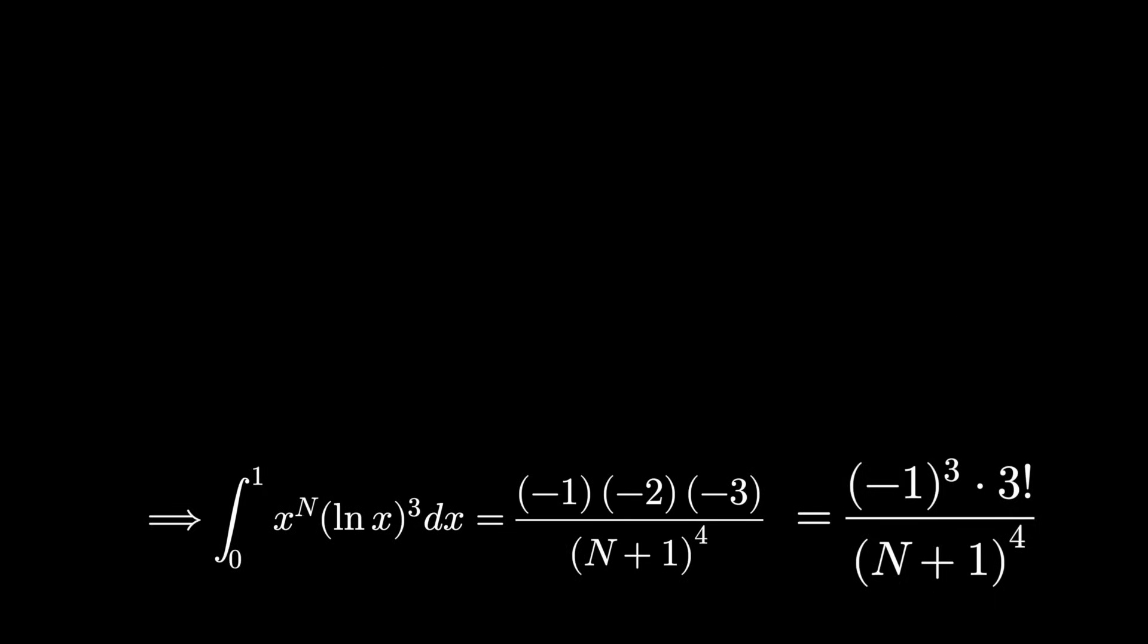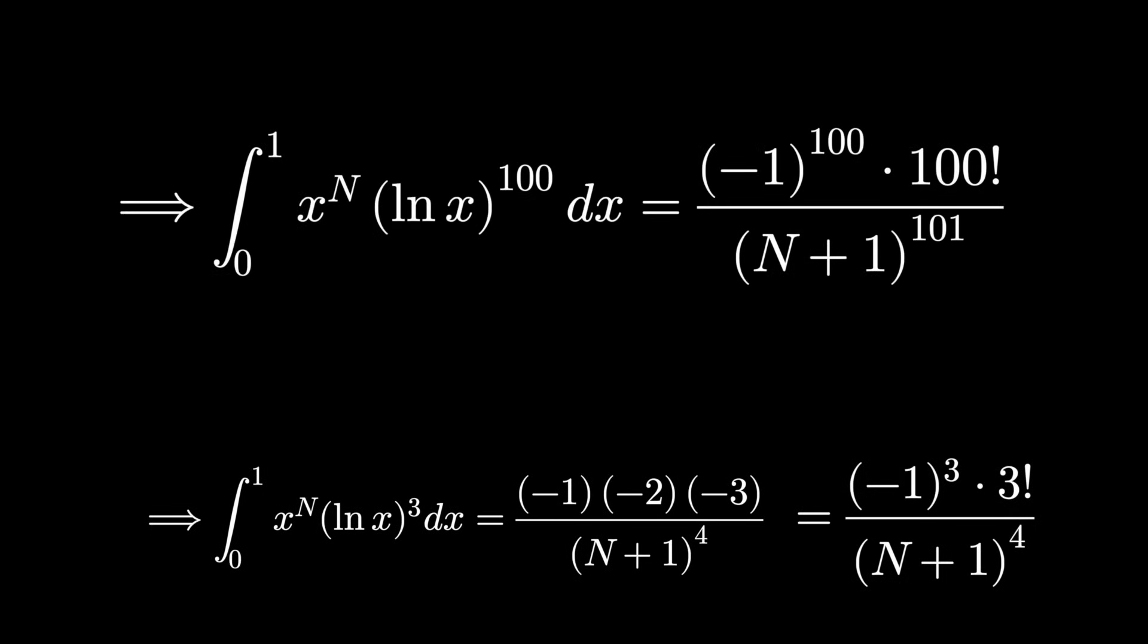If we took 100 derivatives, we would get on the left-hand side something very close to the original integral we were trying to solve. And the pattern on the right, minus 1 to the 100th times 100 factorial over n plus 1 to the power of 101.